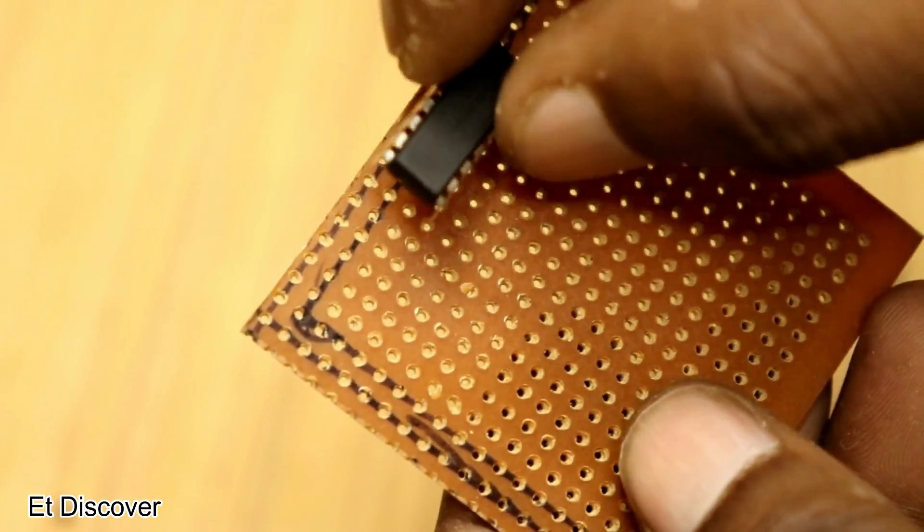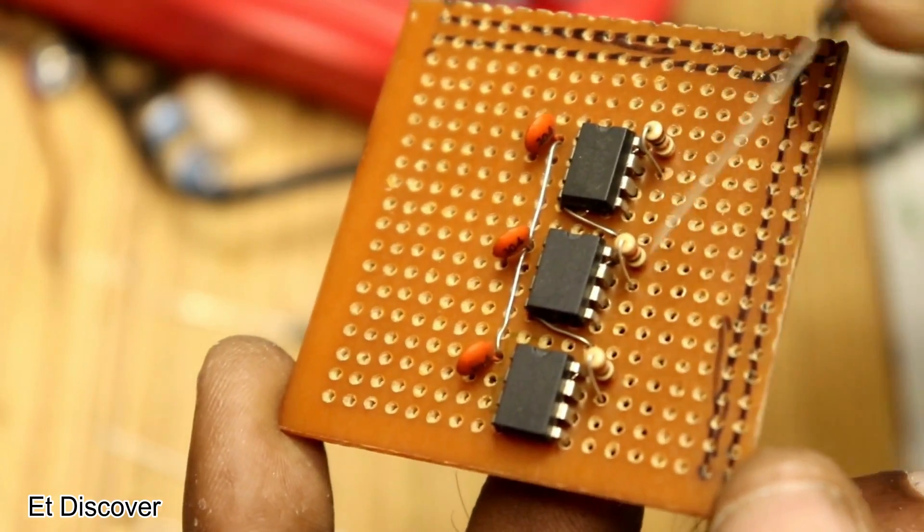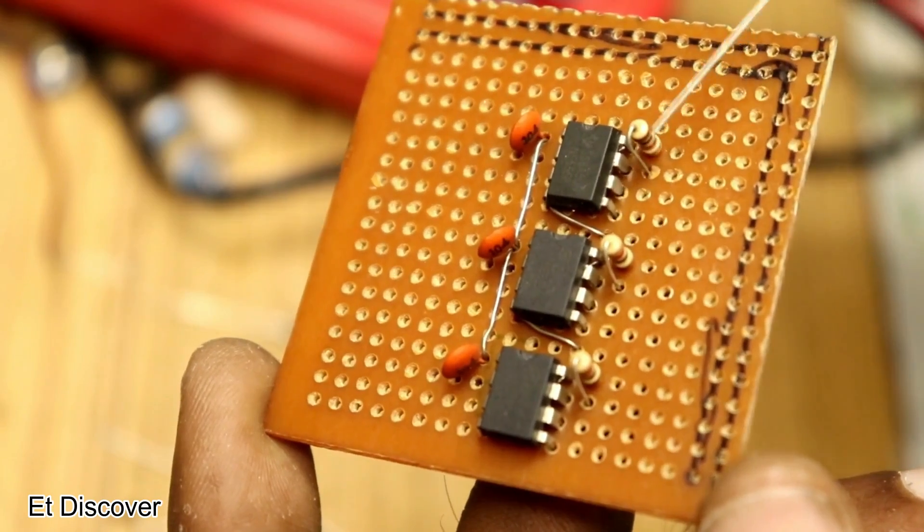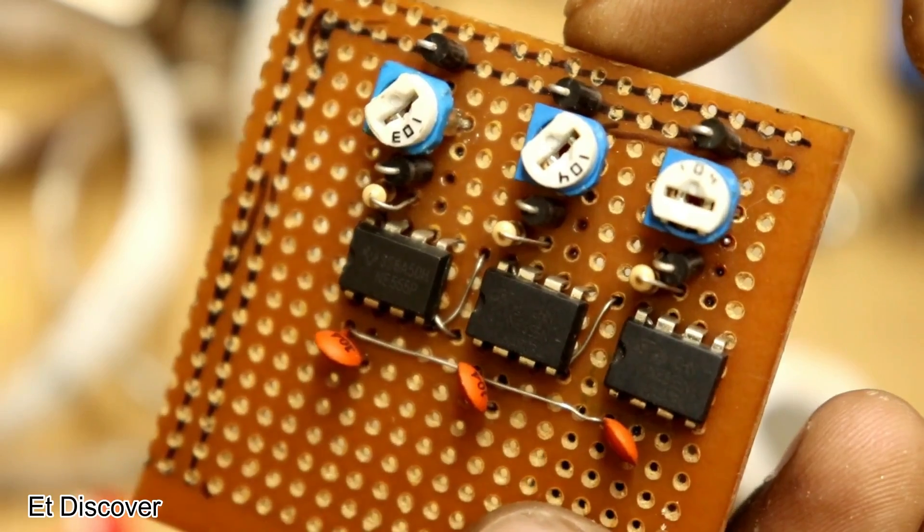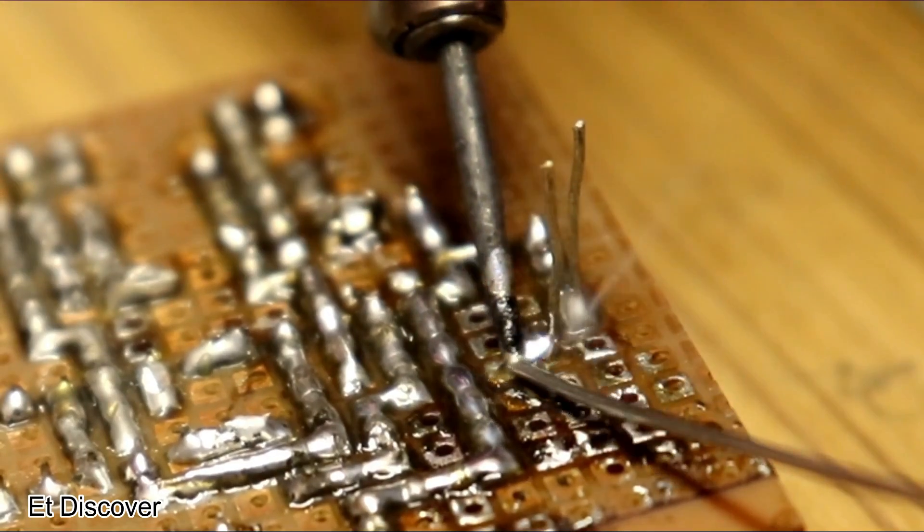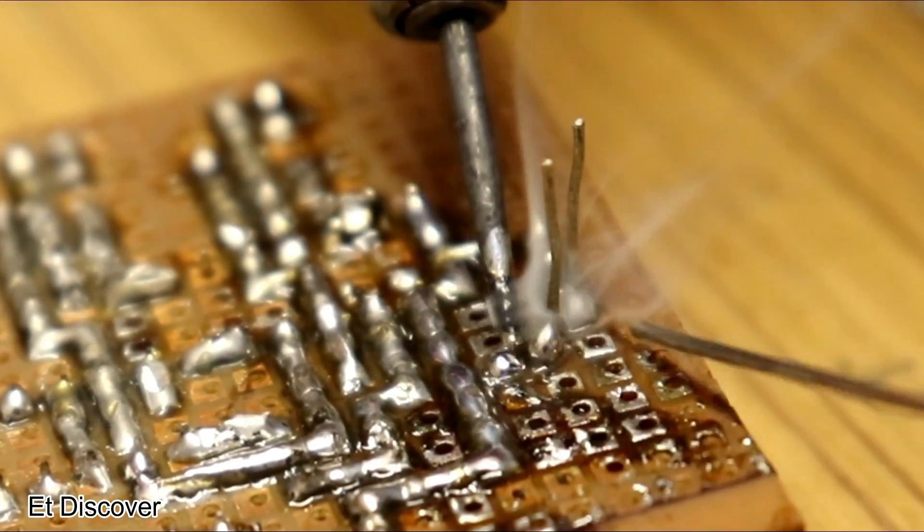I took a breadboard as per my requirement and placed all the components that you already saw in my previous diagram. My mixed analog circuit is almost ready. When my work was completed, I discovered a problem.